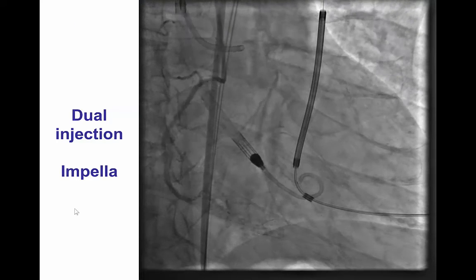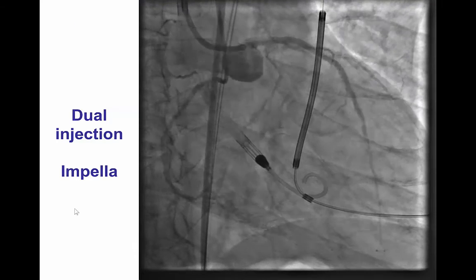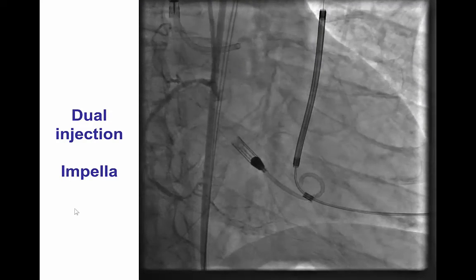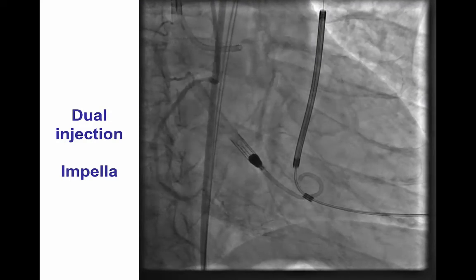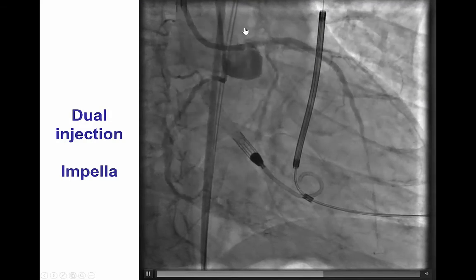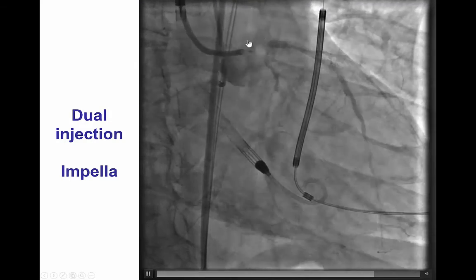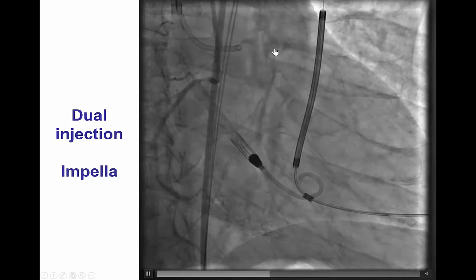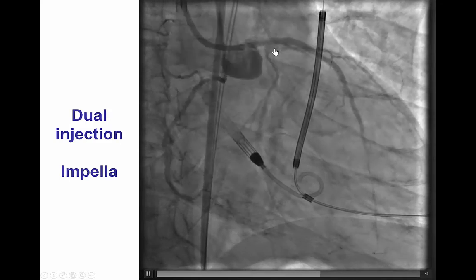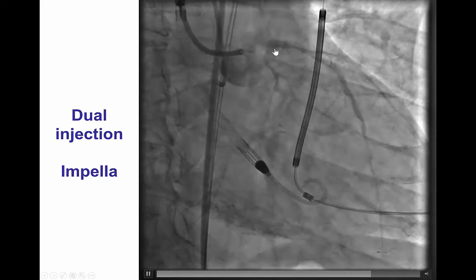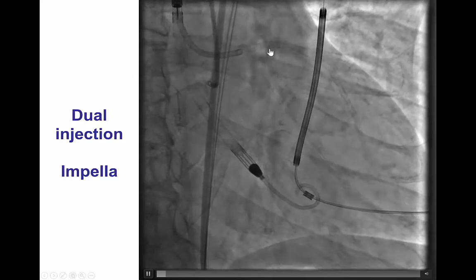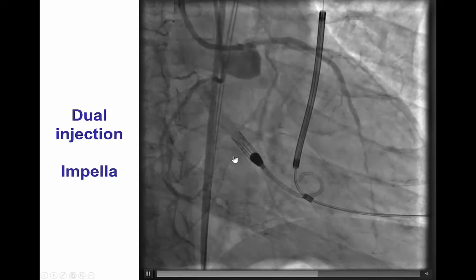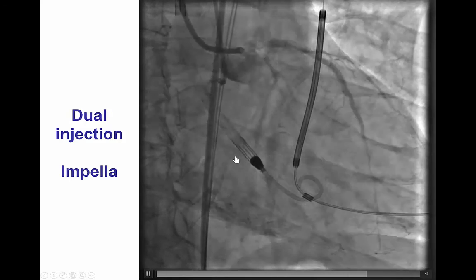Given the patient's low ejection fraction and presentation with an acute coronary syndrome, as well as the complexity of the disease — since essentially the LAD and left main were supplying most of the myocardium — we elected to implant a prophylactic hemodynamic support device, an Impella.